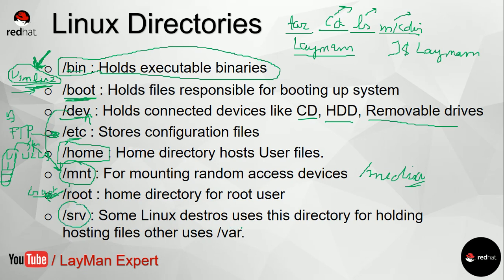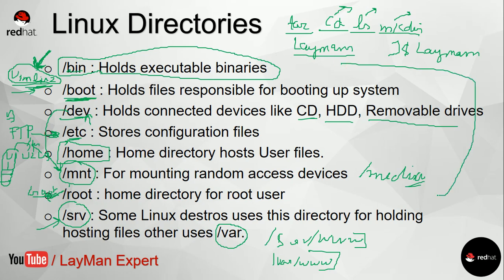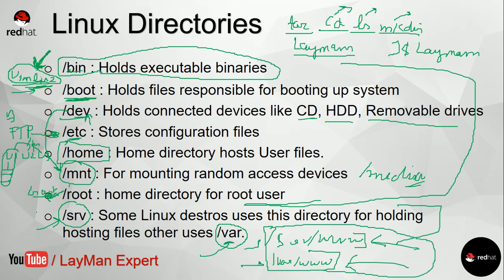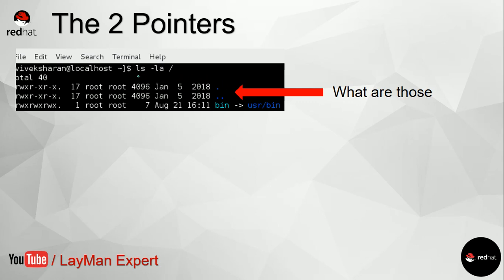/srv stands for server. Some Linux distributions use the /srv folder for their web server — for example, /srv/www is where Apache creates the www folder. However, this is not true for all distributions. Some distros using Apache create the directory inside /var instead. The difference is that arch-based Linux may use the /srv format while Debian-based Linux may use the /var format — it depends on the distribution.